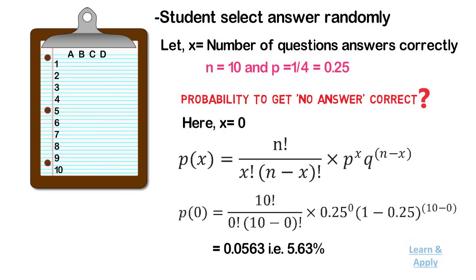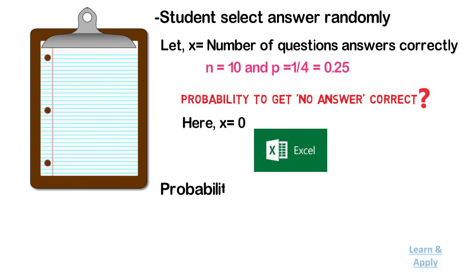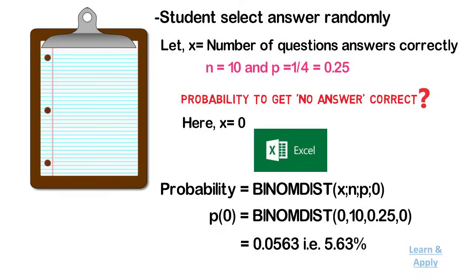That is, 5.63% is the probability that no answer will be correct. We can also use Excel to find probability related to binomial distribution — the number of successes x in n trials — calculated as: P = BINOMDIST(x, n, p, 0). For the above example, P(0) = BINOMDIST(0, 10, 0.25, 0) = 0.0563, that is 5.63%.